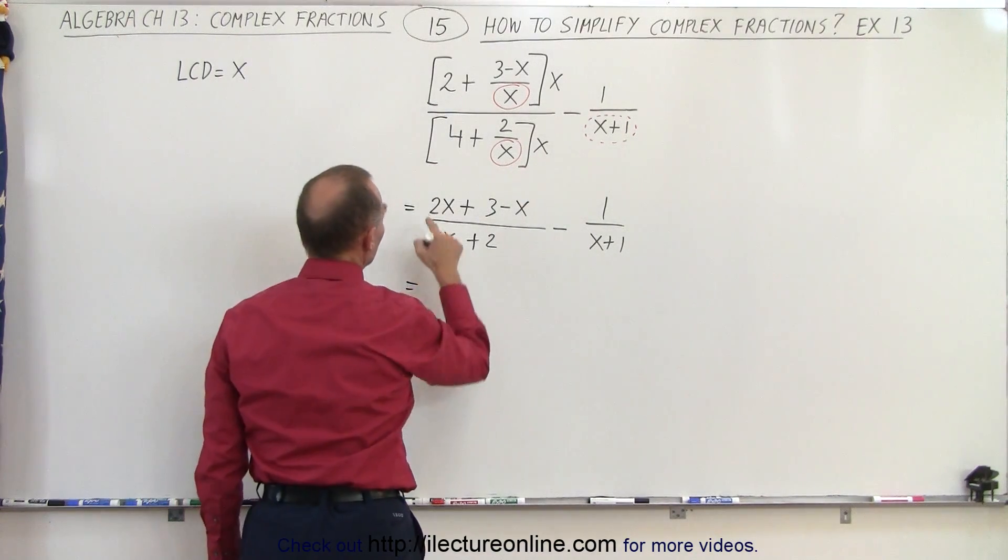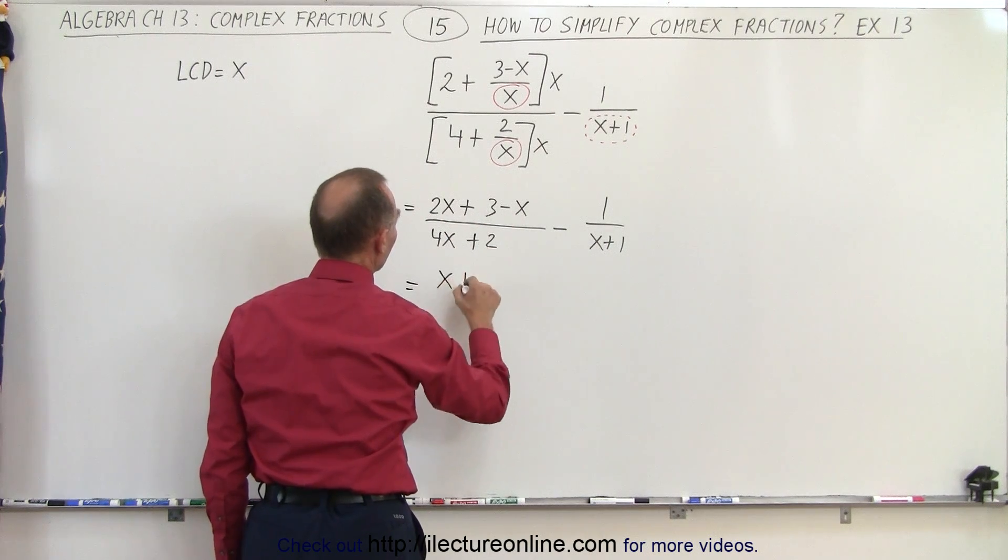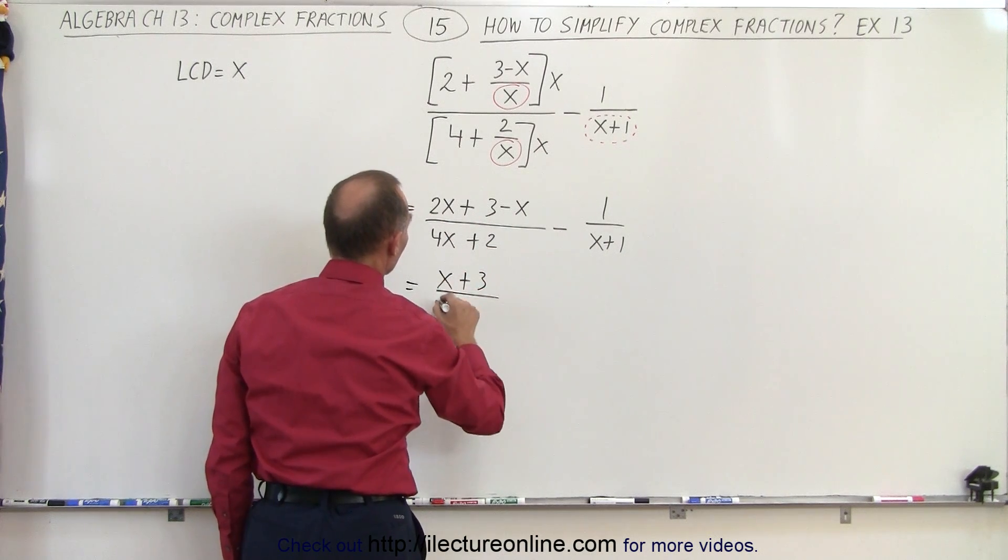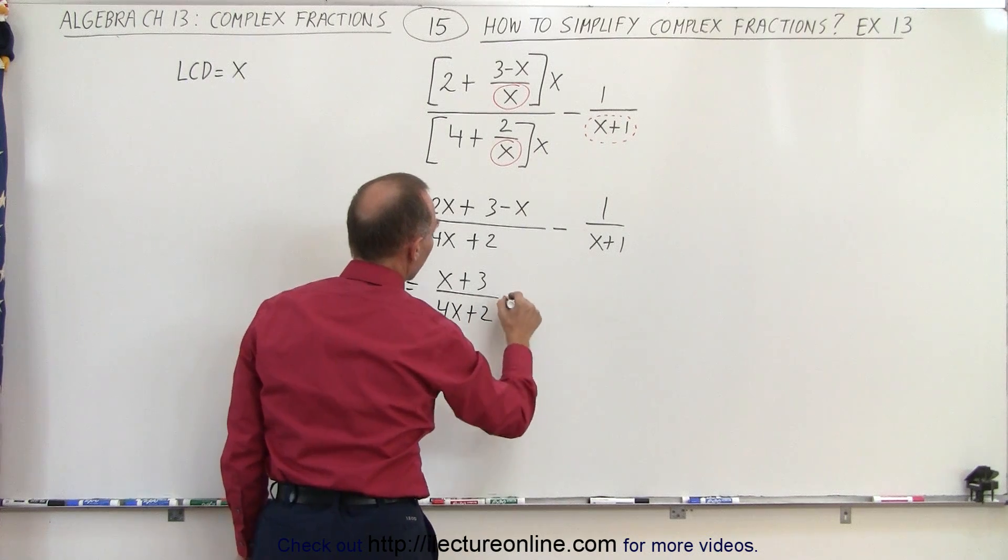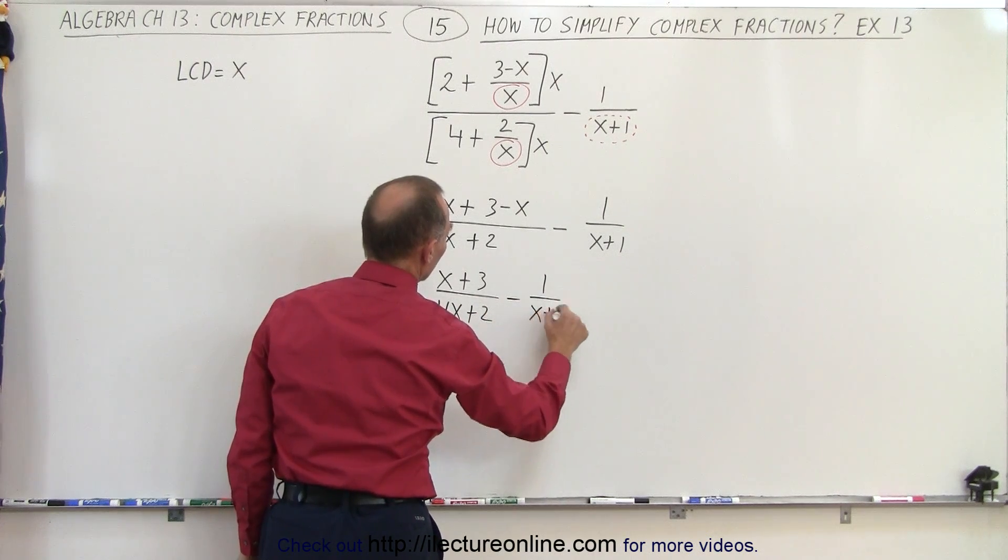So here we have a 2x minus x which is x plus 3 divided by 4x plus 2 minus 1 over x plus 1.